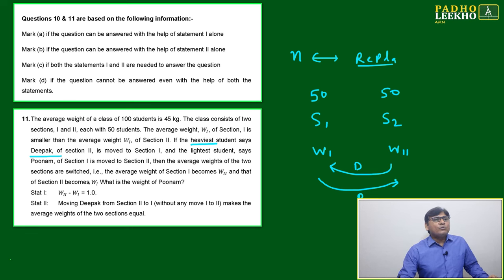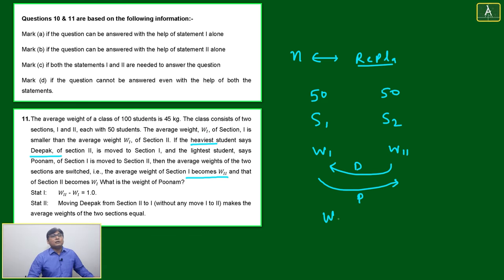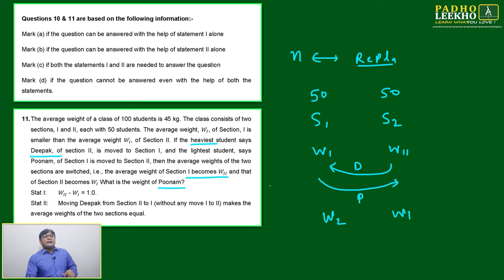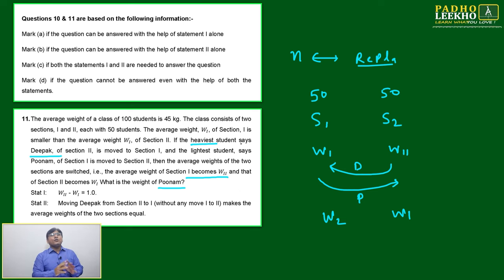After shifting, the average weights of the two sections are switched. Earlier it was w1 and w2; after shifting, Section 1 becomes w2 and Section 2 becomes w1. The question is: what is the weight of Poonam?